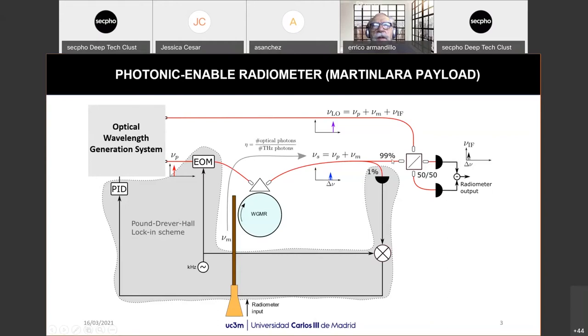The resulting signal from the integration between the optical and microwave signal is outcoupled by the same prism and sent to a splitter with a power ratio of 99% and 1%. The 1% signal is used as the input to the PDH locking scheme in order to stabilize the wavelength of the optical carrier to a resonance of the resonator, just to lock in this wavelength. The other 99% of the signal goes to an optical coupler to be downconverted to baseband.